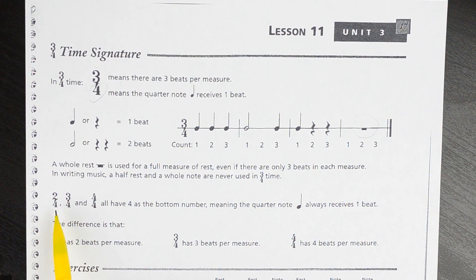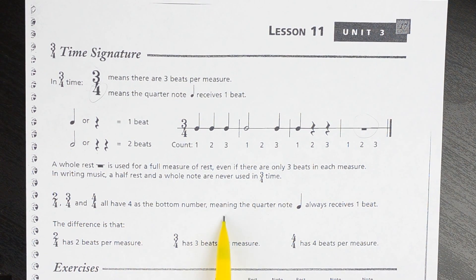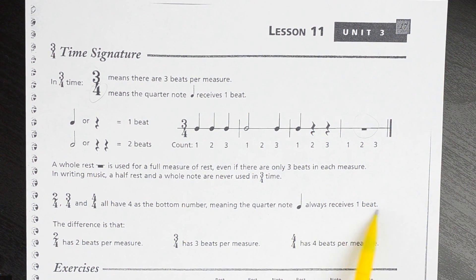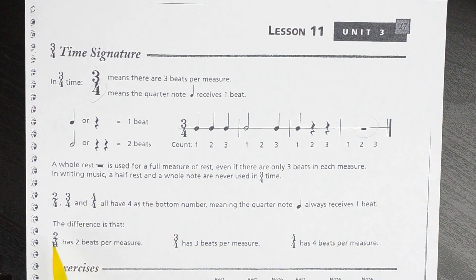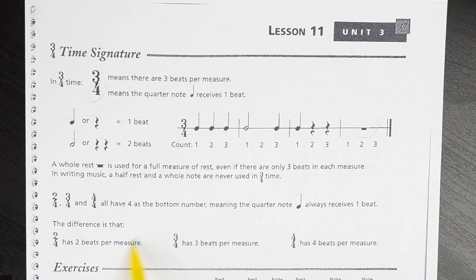To sum up the last few lessons: 2/4, 3/4, and 4/4 all have fours as the bottom number, meaning the quarter note always receives one beat. The difference is: 2/4 has two beats per measure, 3/4 has three beats per measure, and 4/4 has four beats per measure. That's the big difference.